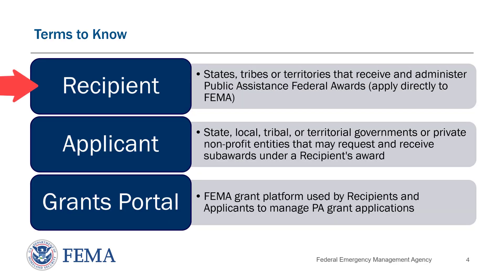The Recipient is the State, Tribe, or Territory that receives and administers the Public Assistance Federal Award. They apply directly to FEMA. The Applicant is a State, Local, Tribal, or Territorial Government or eligible private nonprofit entity that may request and receive subawards under a recipient's award. You may also hear the term subrecipient, which refers to an applicant or their subordinate organization after funding has been obligated. Grants Portal is the online grant platform used by recipients and applicants to manage their PA grant applications.